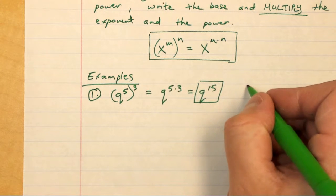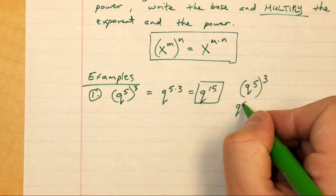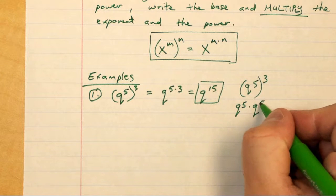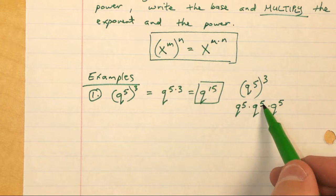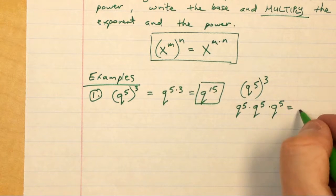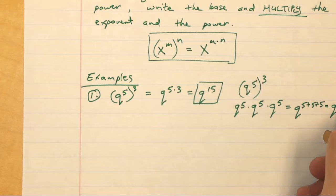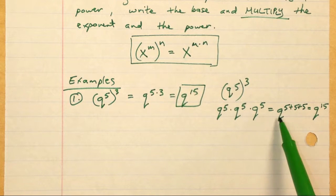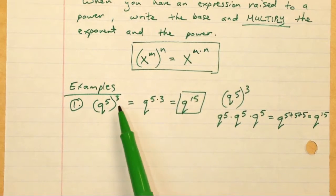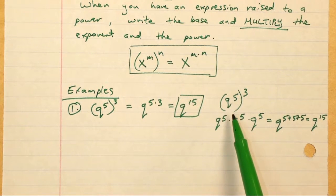Another way of looking at this: if I had q to the fifth power raised to the third power, that's the same thing as q to the fifth power times itself three times. If I want to use the product rule, I would add up all these exponents since all have the same base, and that equals q to the fifteenth. But that is a lot of extra work. Why do that when you can just multiply both exponents together? That's the shortcut — the power-to-power rule is essentially a shortcut to the product rule.